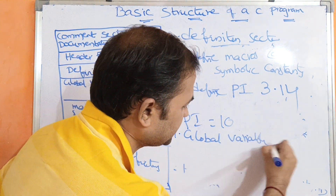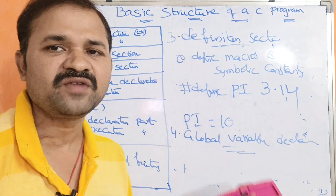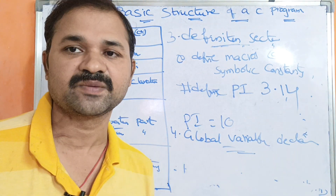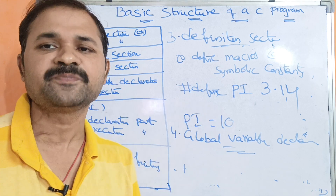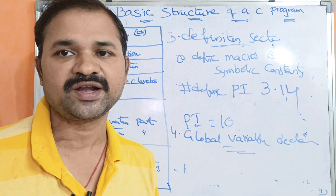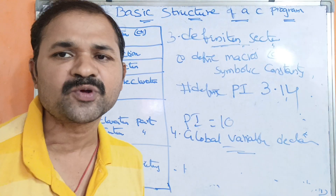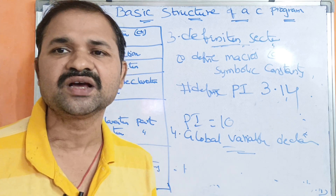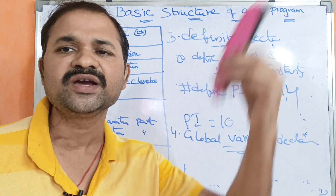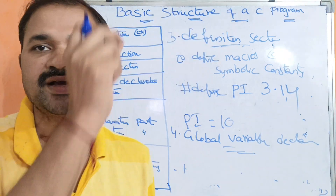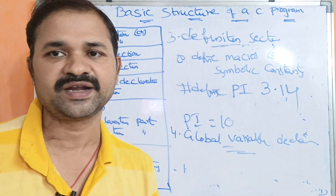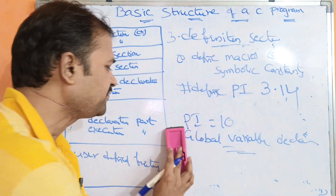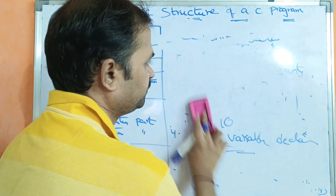The fourth section is the global variable declaration section. Global variables are declared outside and above the main function. The advantage of a global variable is that throughout the program we can use it. Suppose a program has 100 functions — instead of declaring the same variable in each function, we declare it once as a global variable and all 100 functions can use it.